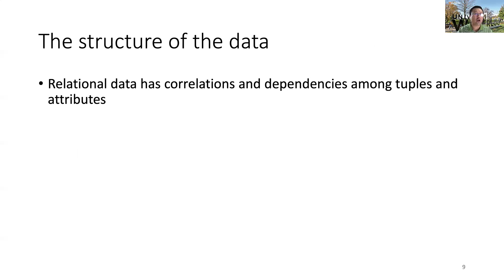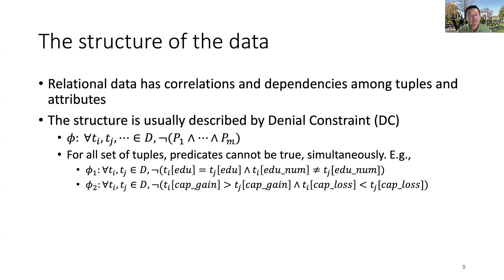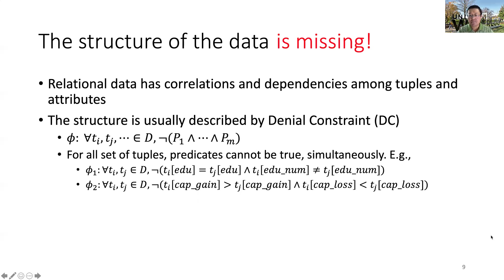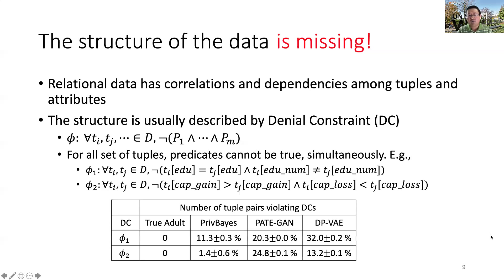Recall that relational data has a structure, namely the dependencies and correlations among tuples and attributes. This structure can be described by denial constraints. For example, a functional dependency — education determines education number — can be described by a denial constraint Φ: for any tuple pair, if they have the same education, their education number cannot be different. So tuples in relational data are not IID, and the structure in the synthetic data produced by existing methods is missing. As an empirical proof, this table shows that on the true EIDA dataset there is no DC violation, but the synthetic data generated by state-of-the-art methods, including PrivBayes, Patagon, and DPVE, can have up to 32% of tuple pairs violating the DCs, simply because the structure of the data is not explicitly captured by those existing methods.